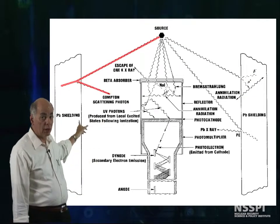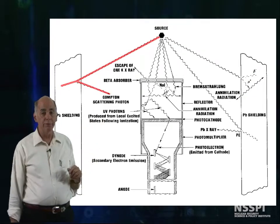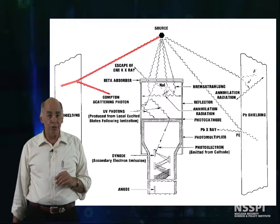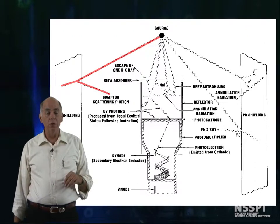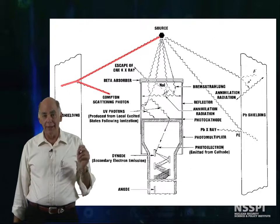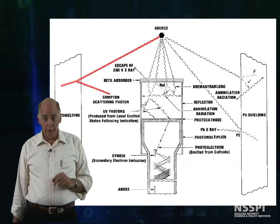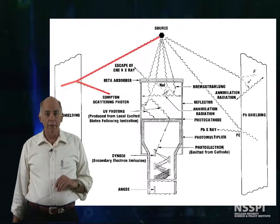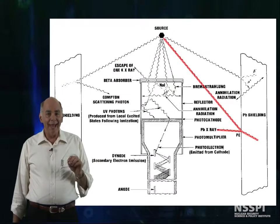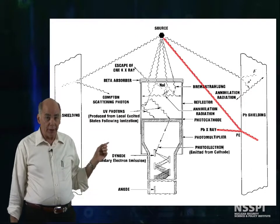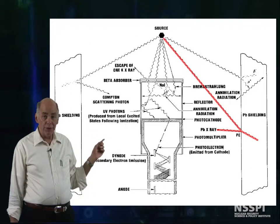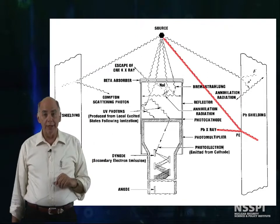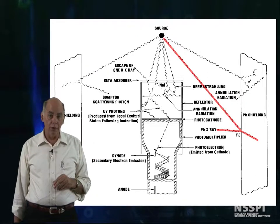As shown here, a gamma from the source can suffer a Compton interaction in the shielding, and the resulting Compton photon can be counted. And, as before, this is not part of the original spectrum. With any gamma interacting in the shielding, lead characteristic x-rays will be produced. These can also enter the detector, and again, they're not part of the source spectrum.